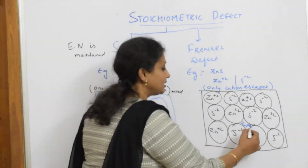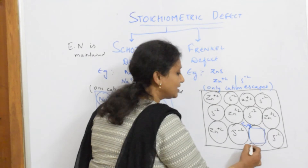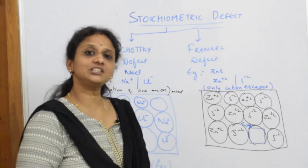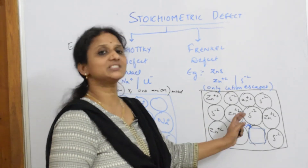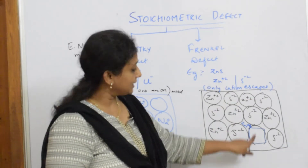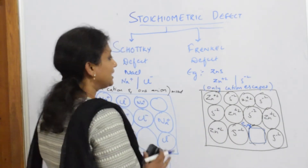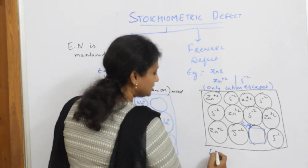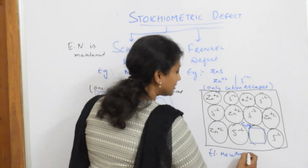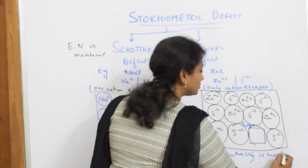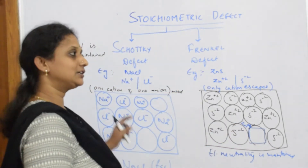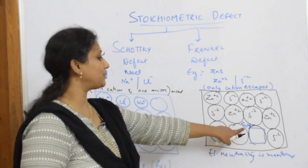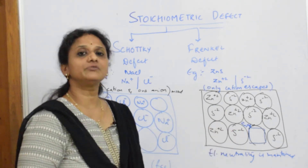When one cation escapes out, is there any difference in the electrical neutrality? No, because it is only the cation which is escaping — it is not moving out of the solid, it is just occupying the space in between, the interstitial site. So electrical neutrality is maintained. Nothing is lost because the cation is just in the interstitial site.